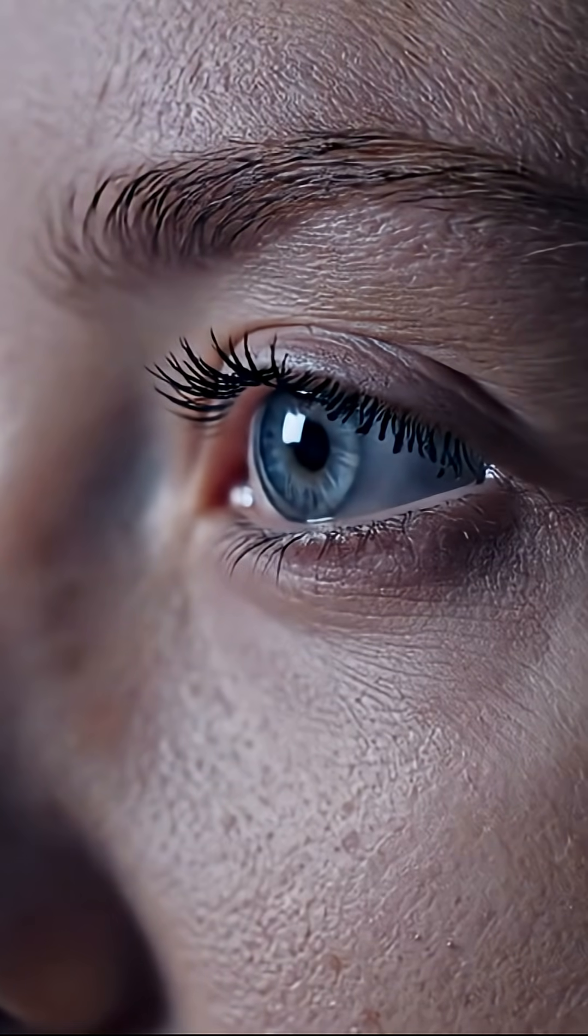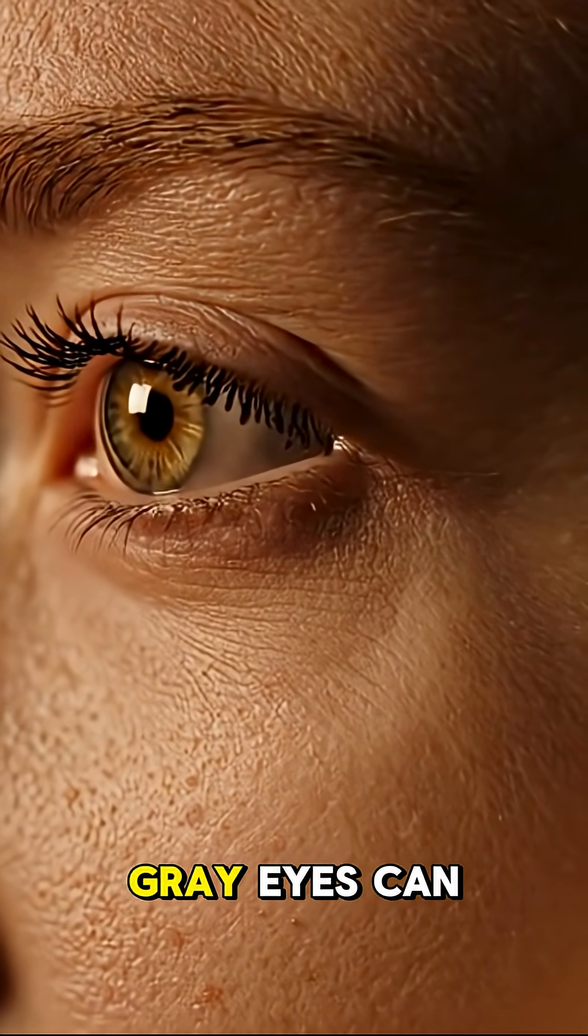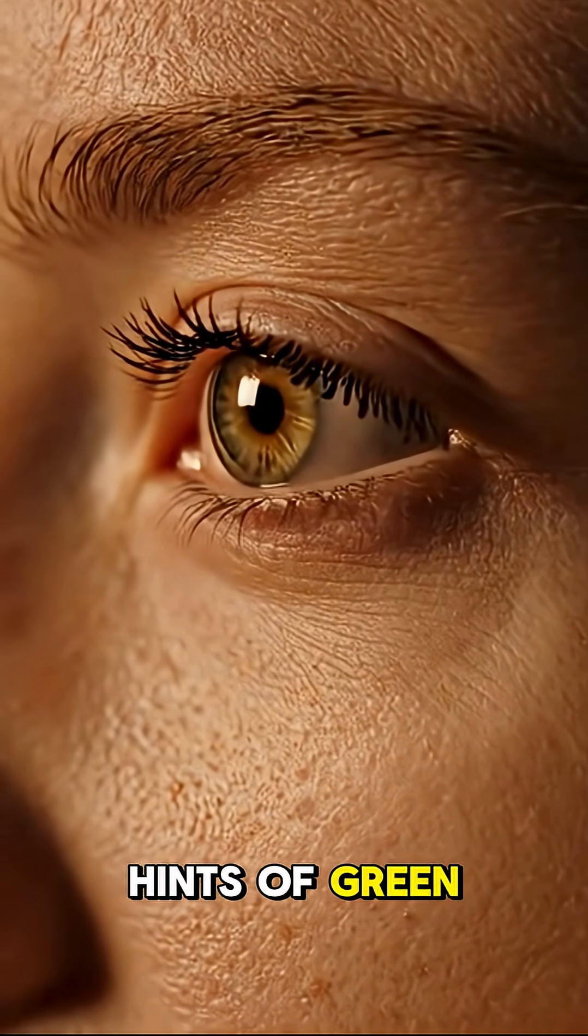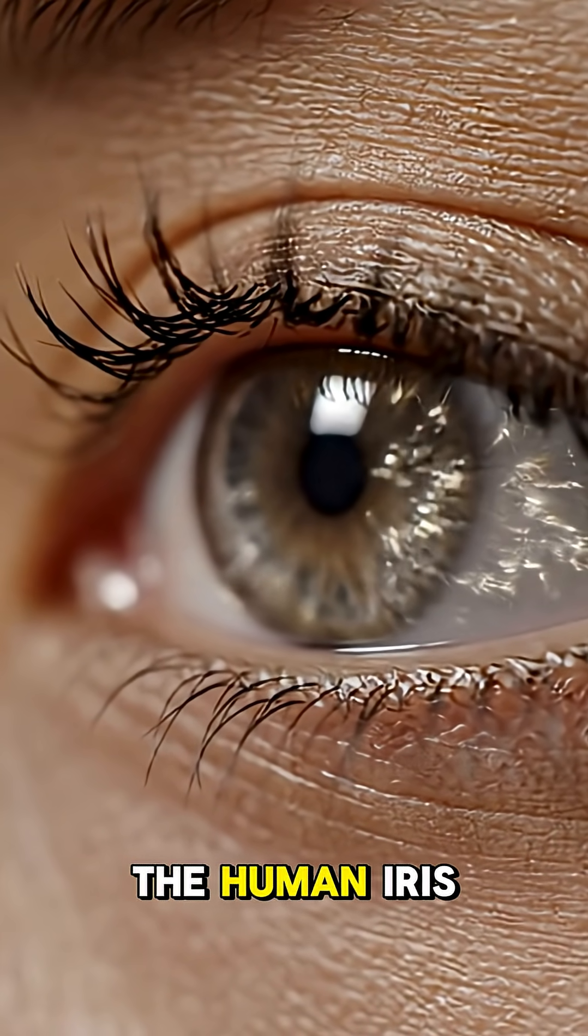What's even more fascinating is how they seem to change color. Depending on the lighting, gray eyes can appear blue, silver, or even have hints of green. It's like a natural optical illusion hidden right inside the human iris.